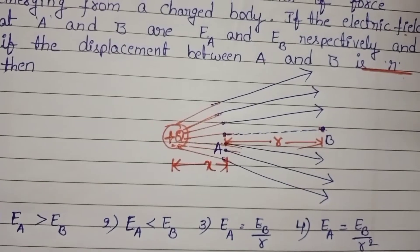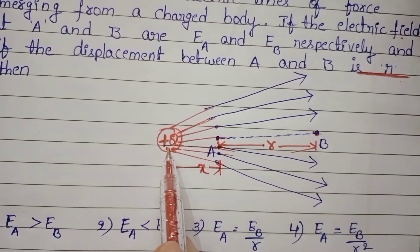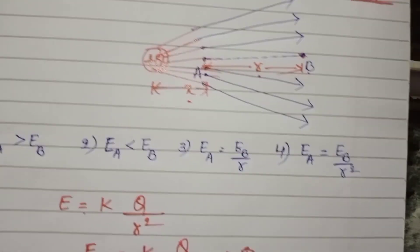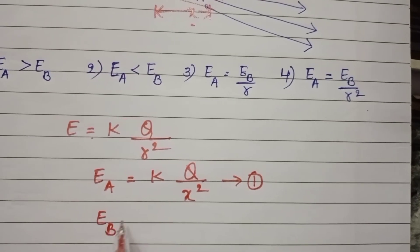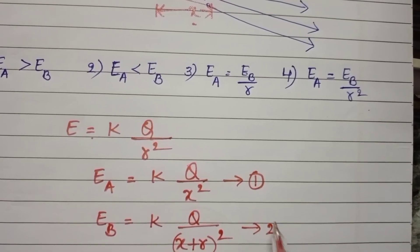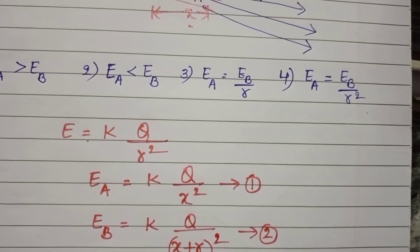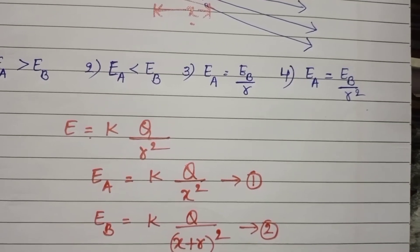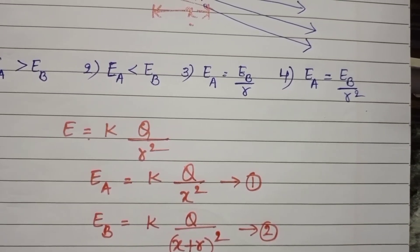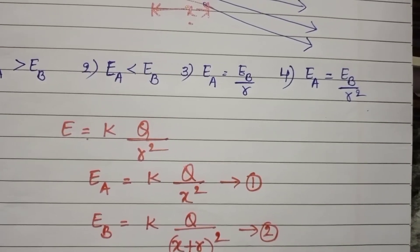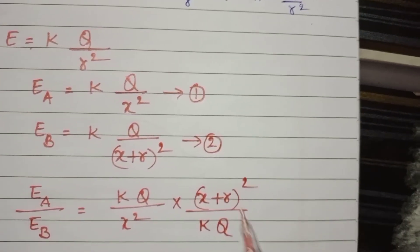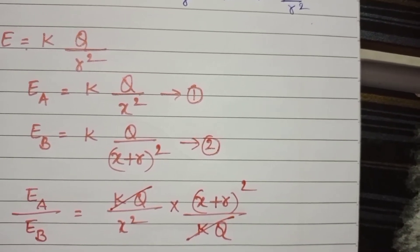The intensity of electric field at point B — since the distance from charge to B is X plus R — is EB = KQ/(X+R)². Taking the ratio of these two intensities: EA/EB = [KQ/X²] / [KQ/(X+R)²]. The KQ terms cancel with each other.